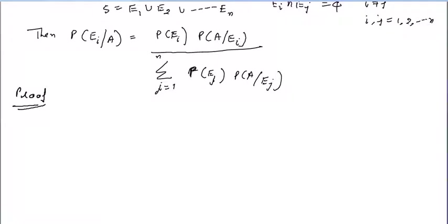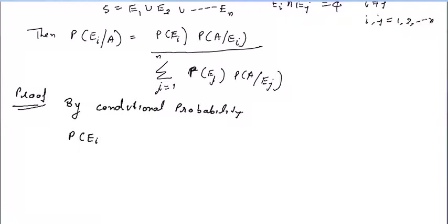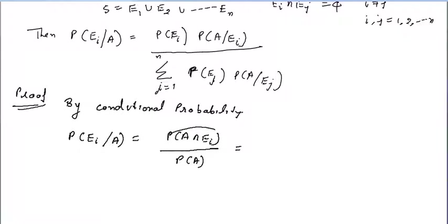There is a proof of this theorem. By conditional probability, the probability of Ei given A equals probability of A intersection Ei divided by probability of A. And by the multiplicative theorem, probability of A intersection Ei equals probability of Ei into probability of A given Ei.